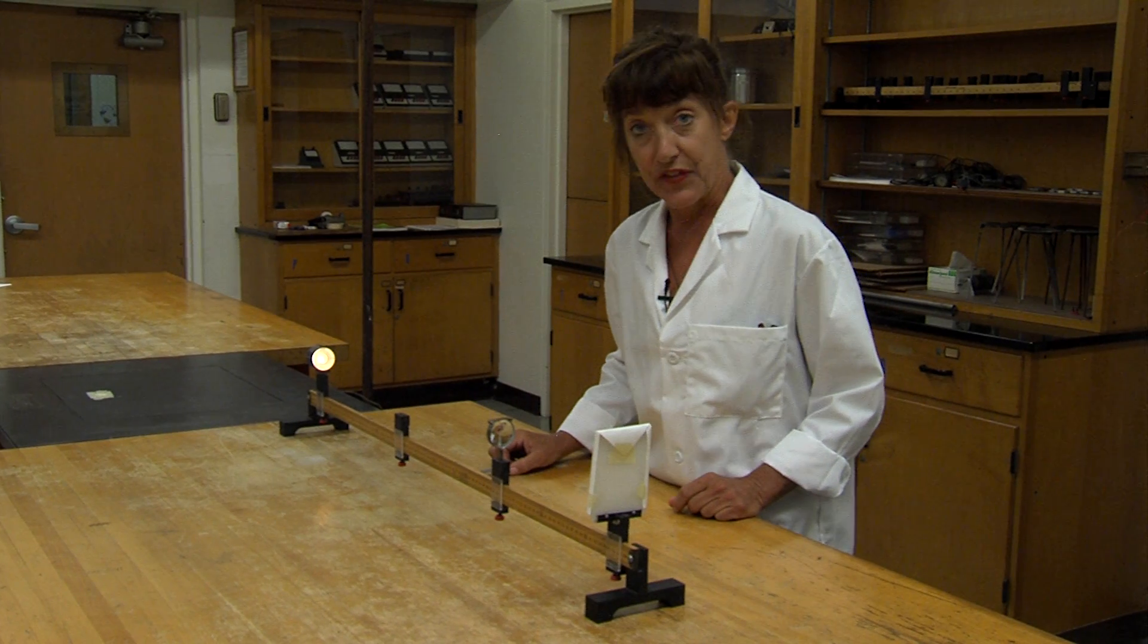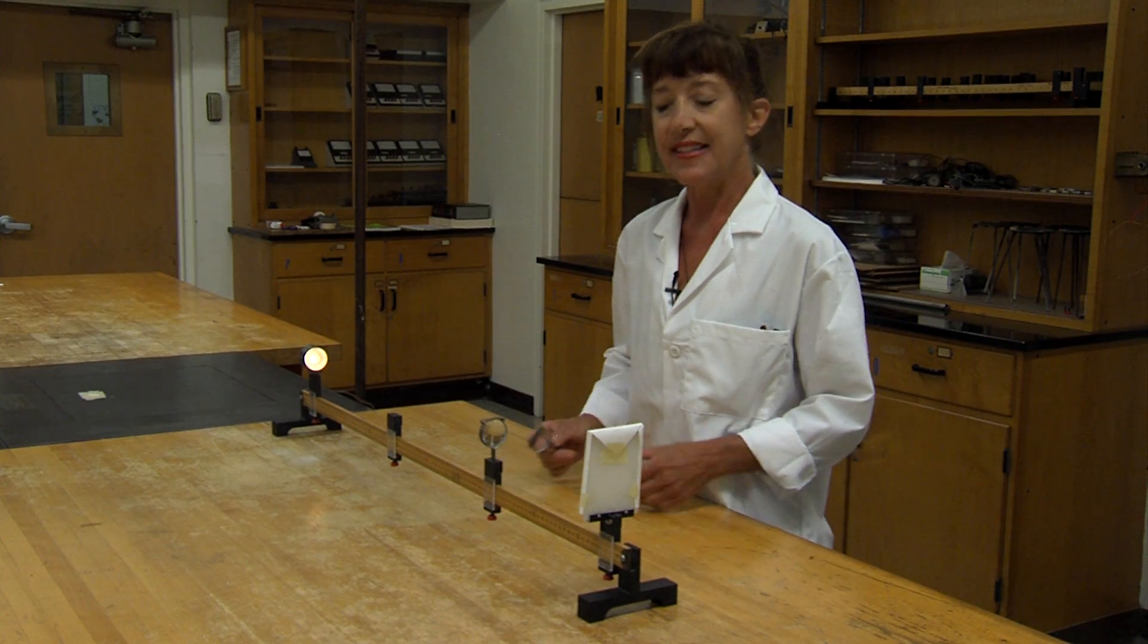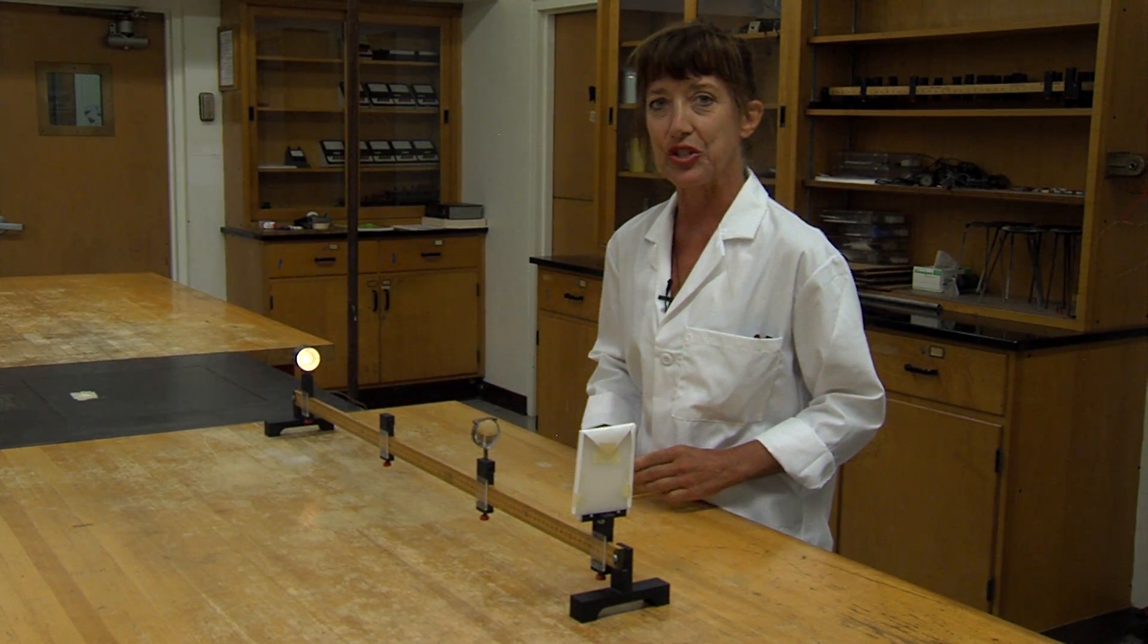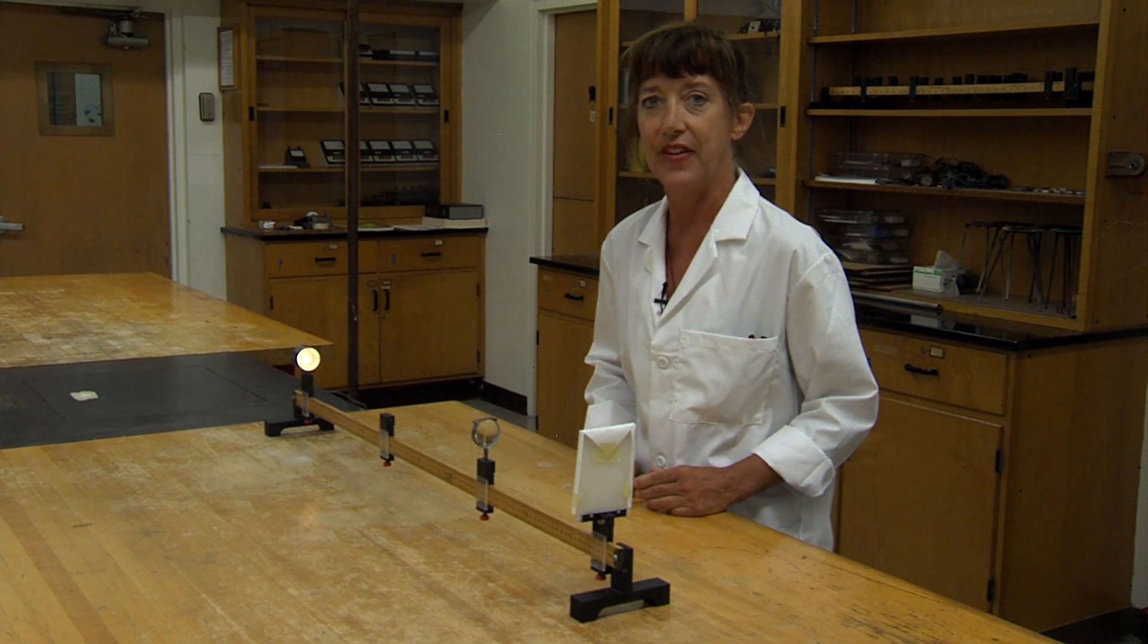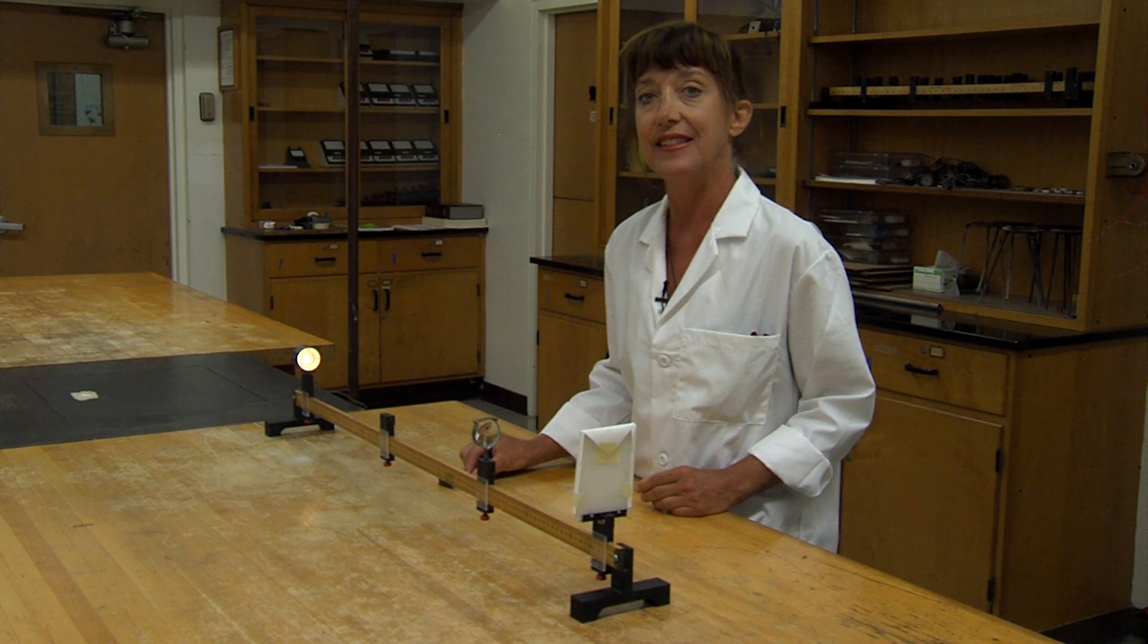In the next part of the lab, we will be calculating the actual focal length of two different lenses. The estimated focal length is written on top. However, much like resistors, this is often just an estimated value. We will be calculating the actual value, which is a property of the lens itself.